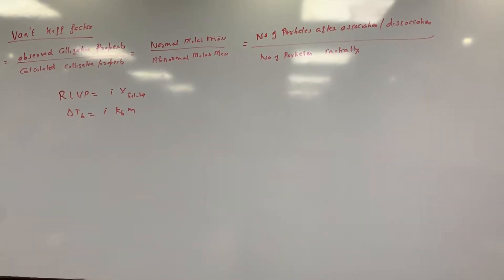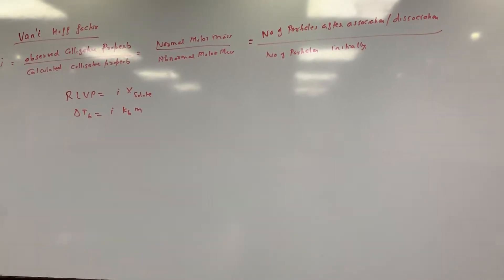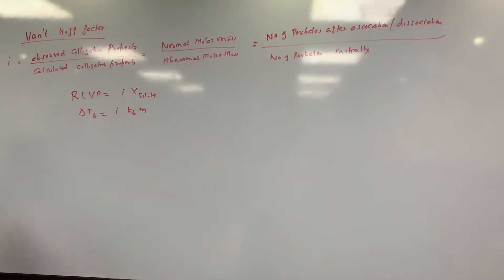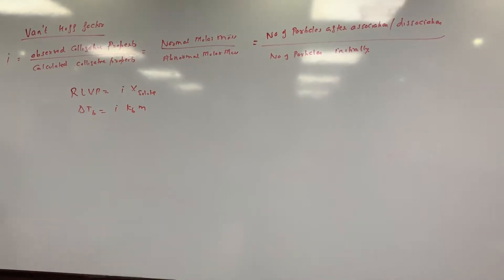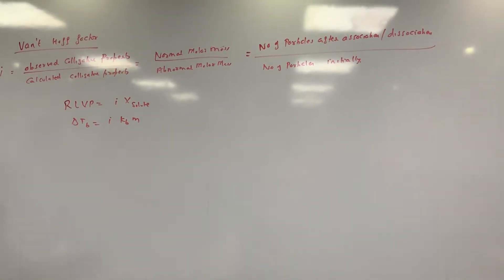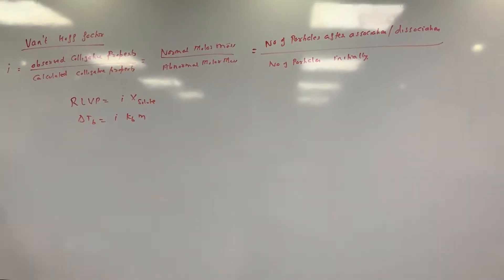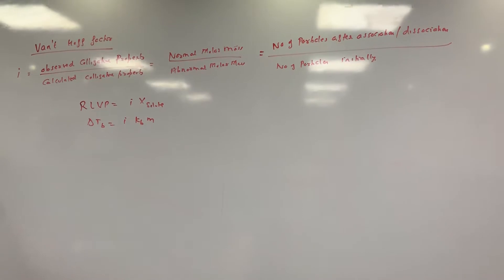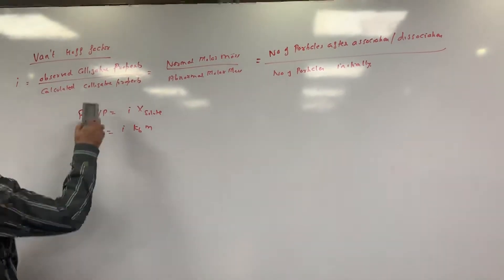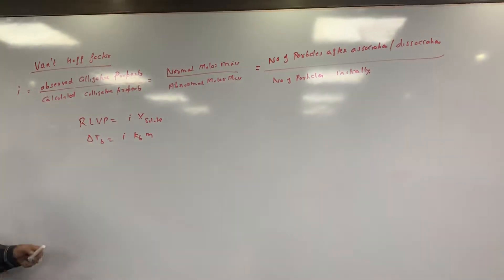There are two cases — one is for dissociation, one is for association. This year a question has come on association; there is a solid example in NCERT. We will be able to do that after covering both cases, so let us start now.